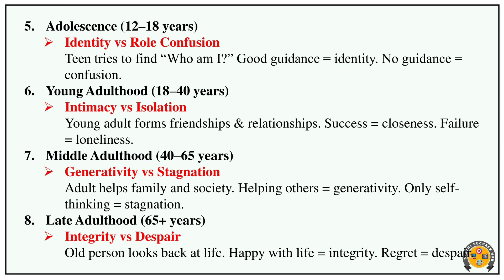In middle adulthood, around age 40 to 65, the struggle is generativity versus stagnation. In this stage, family is the main focus. Caring for others represents generativity. Stagnation is selfishness — only focusing on oneself. In middle age, these are the struggles.